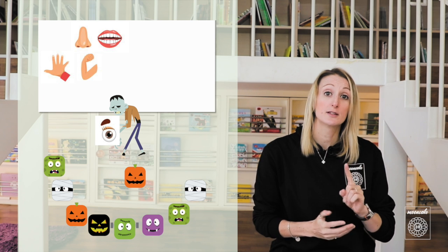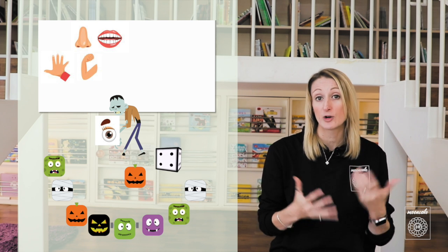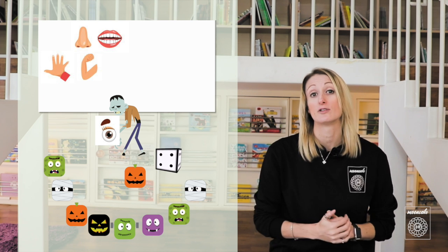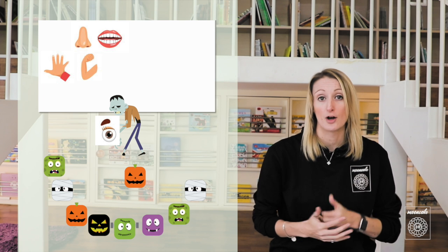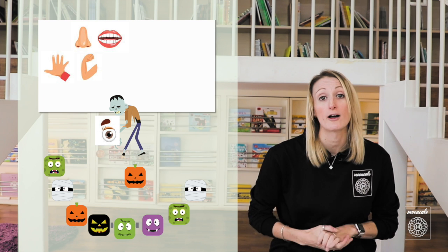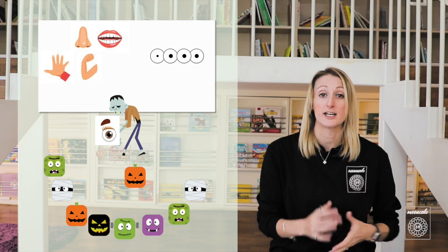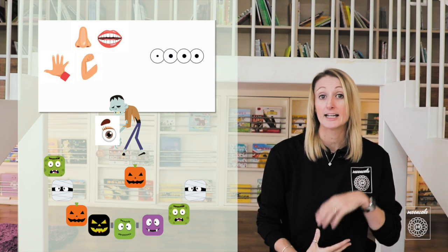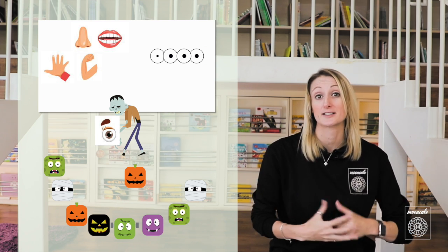One student comes to the middle, rolls the die, and whatever number it lands on is the number of eyes the monster is going to have. The whole class then tells you — for example, it has four eyes — and you draw that on the board. Move on to the next body part, roll the die again, and keep going until you've drawn a big scary monster. It's really important that the whole class asks the target questions together as part of our classroom management strategy — check out my classroom management video linked below.